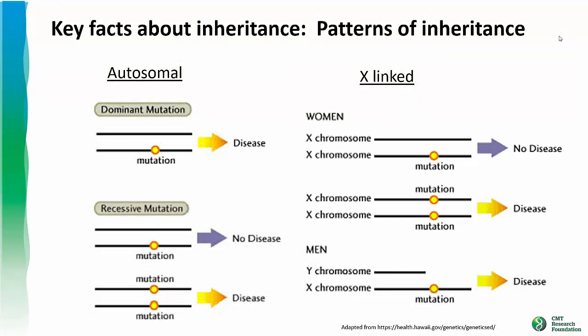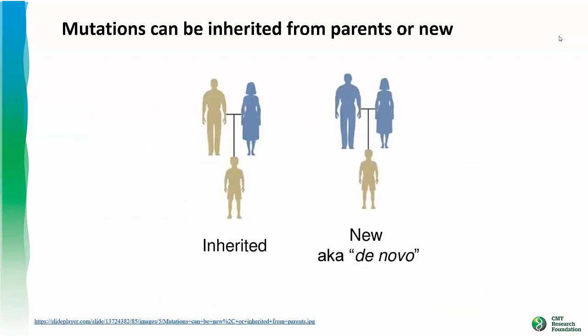CMT is characterized by dominant, recessive, and X-linked mutations. Mutations can be inherited from your parents. Alternatively, early in embryonic development an error occurs and a new mutation arises in the DNA. This is called a de novo mutation, or new mutation, meaning there is no family history of it. Some families have multiple generations of individuals with CMT as the mutant gene is passed from generation to generation, whereas in other families CMT is due to a new mutation.